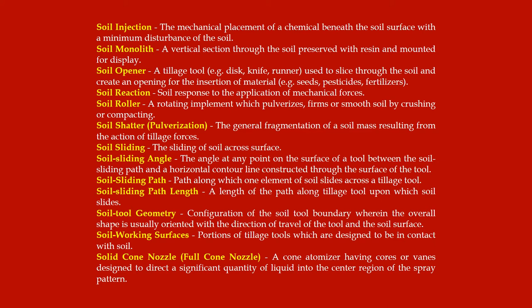Soil sliding: the sliding of soil across a surface. Soil sliding angle: the angle at any point on the surface of a tool between the soil sliding path and a horizontal contour line constructed through the surface of the tool. Soil sliding path: path along which one element of soil slides across a tillage tool. Soil sliding path length: the length of the path along a tillage tool upon which soil slides.